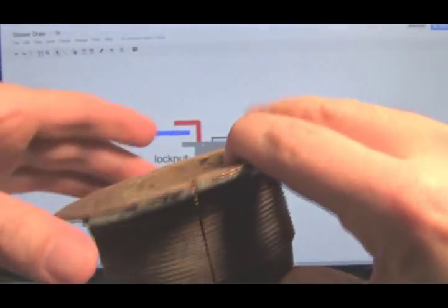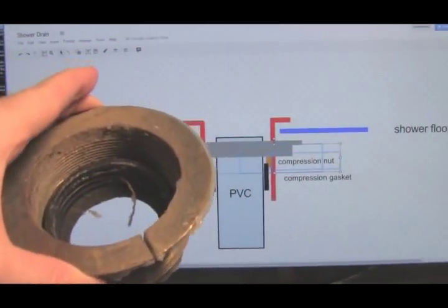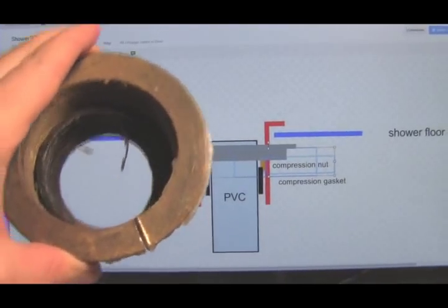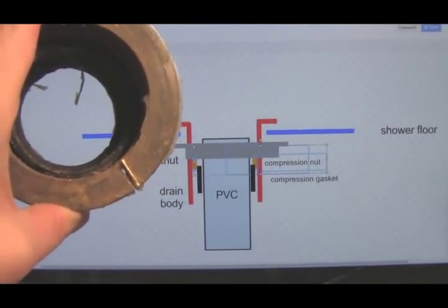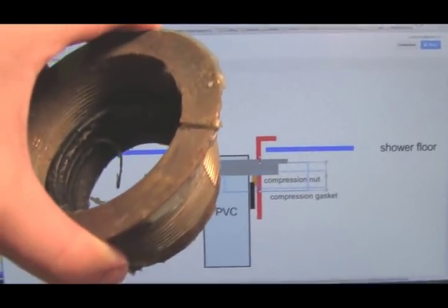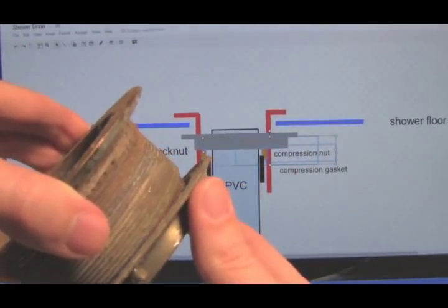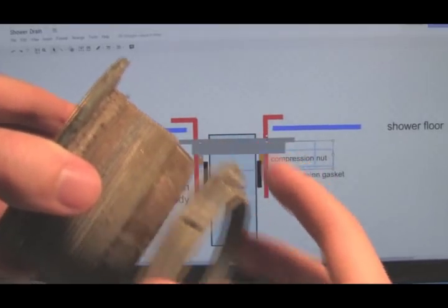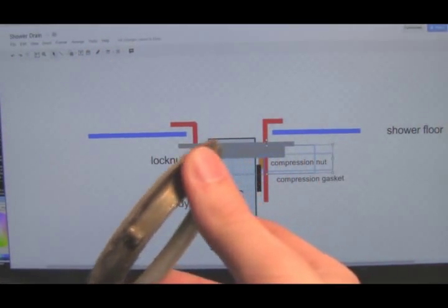You can see it there. I managed to do that without hurting the fiberglass tub for the most part. It took about a half an hour of constant cutting. Once I cut the slot in the drain that was enough to loosen it I guess, and I was able to remove the old lock nut.